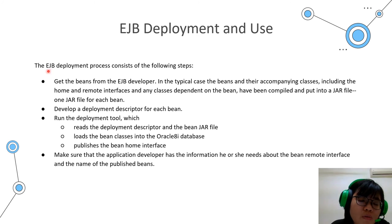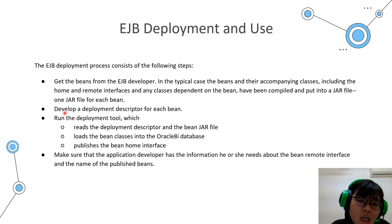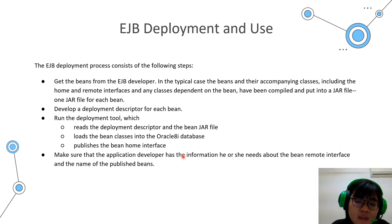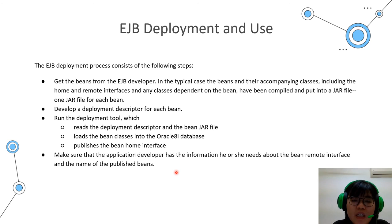There are a few steps in the EJB deployment process. First, get the bean from the EJB developer, which includes the home and remote interfaces, all naming conventions compiled and put into a JAR file. Next, develop a deployment descriptor for each bean. Then the deployment team runs the deployment tool with the deployment descriptor and the JAR, which loads the bean and publishes the bean home interface. Finally, the team must ensure the application developer has the necessary information about the bean's remote interface and the published bean name for documentation and future use.